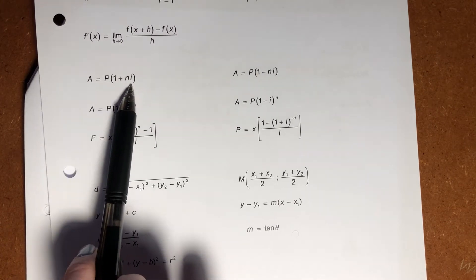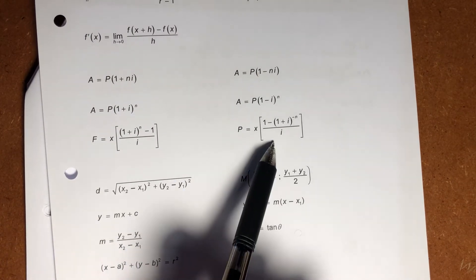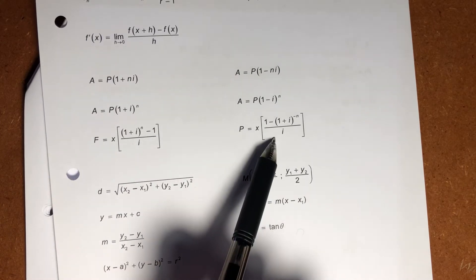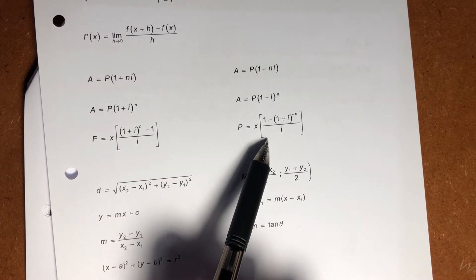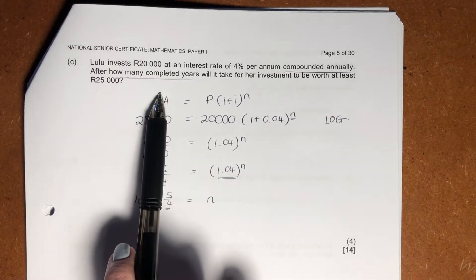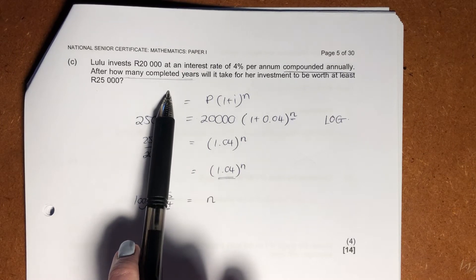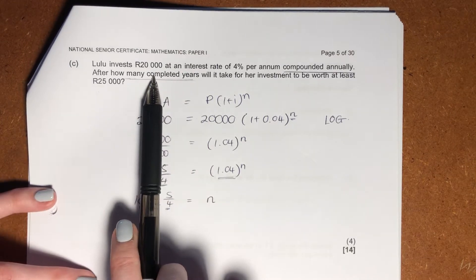You could be saying, well, why don't I use these guys? These guys here are for installments. Are there a bunch of installments here? What do I mean by installments? Regular payments? No, there's just one payment. So I just use this formula.